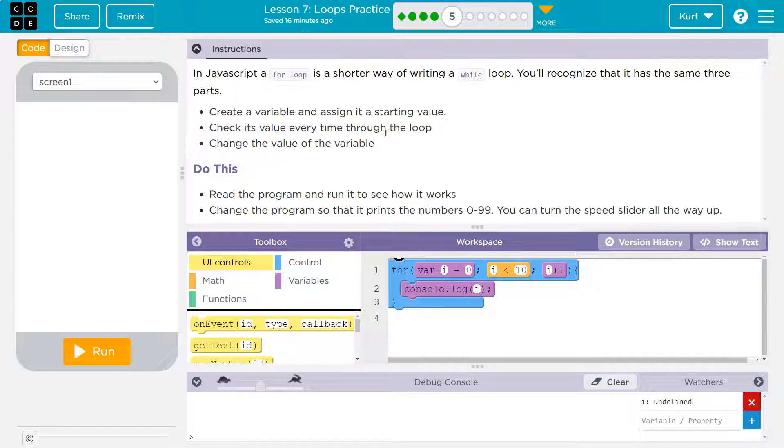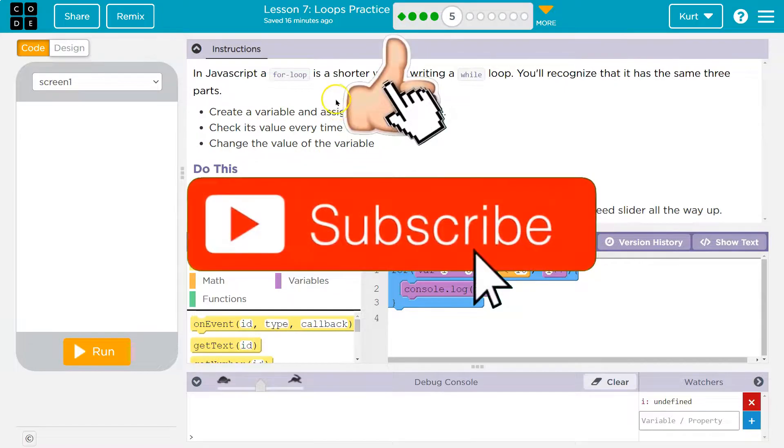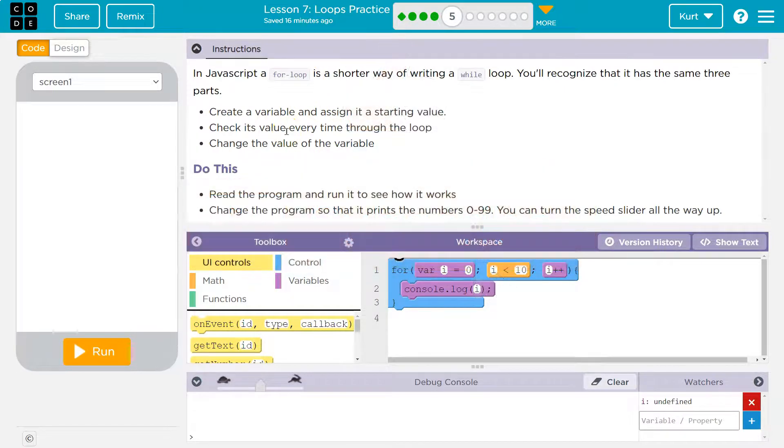You'll recognize that it has the same three parts: create a variable and assign it a starting value, check its value every time through the loop, and change the value of the variable.